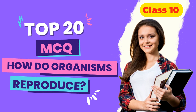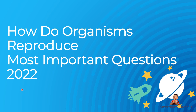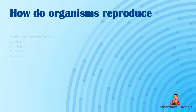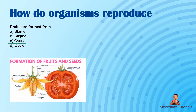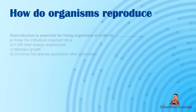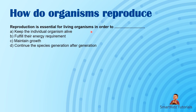Hello students and welcome to Smart Kids Tutorials. In this video we will be going through some very important questions that could come for the upcoming examinations on the chapter 'How Do Organisms Reproduce.' Fruits are formed from — the choices given are stamen, stigma, ovary, ovule — the answer is ovary. You can see it clearly shows the ovary develops into the fruit and ovules develop into seeds.